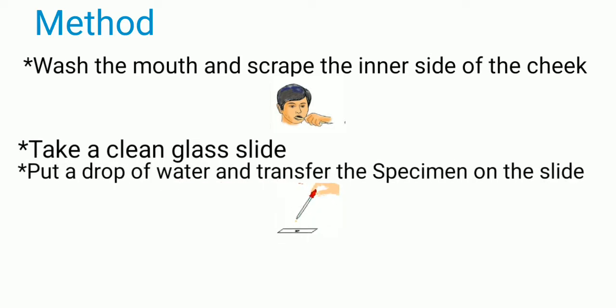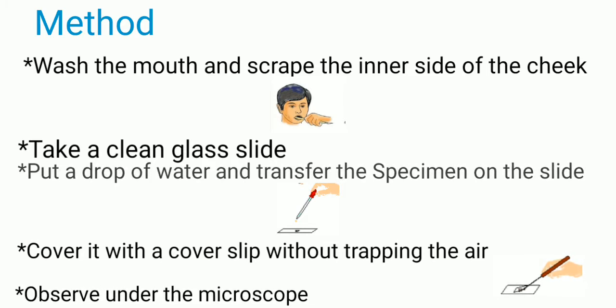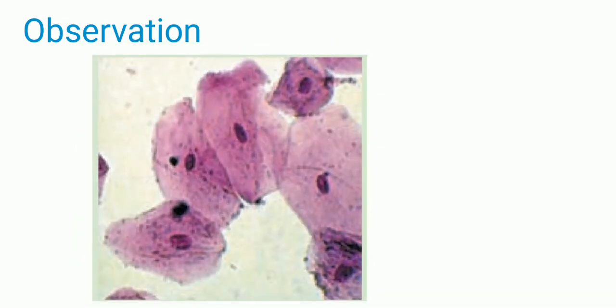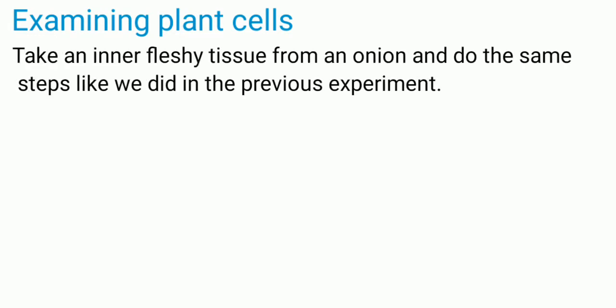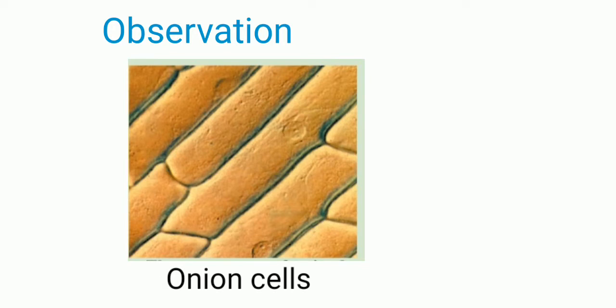Next, put a drop of water and transfer the specimen onto the slide. Finally, cover it with a cover slip without trapping air and observe under the microscope. Here you can see the structure of the cheek cells under the light microscope. To study the plant cell, we take an inner fleshy tissue from an onion by peeling it, then transfer it on a glass slide and observe under the microscope.